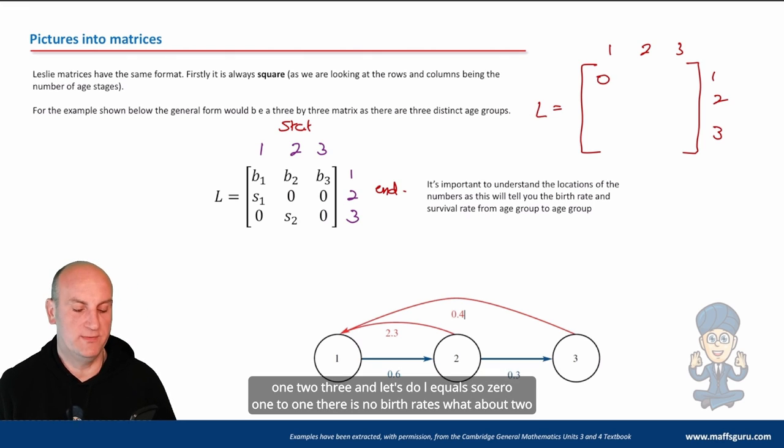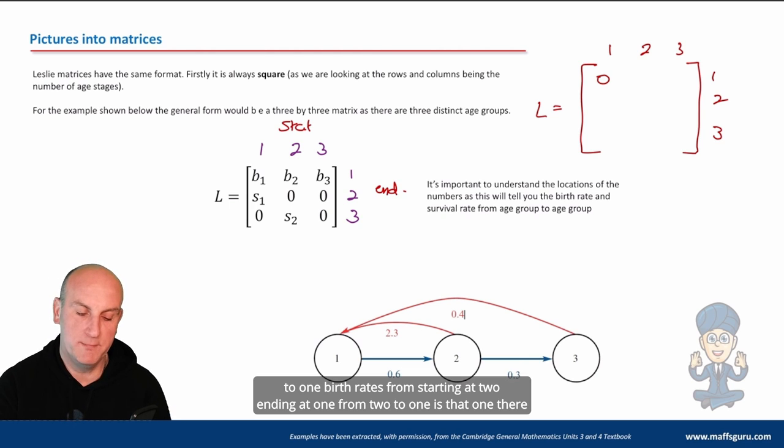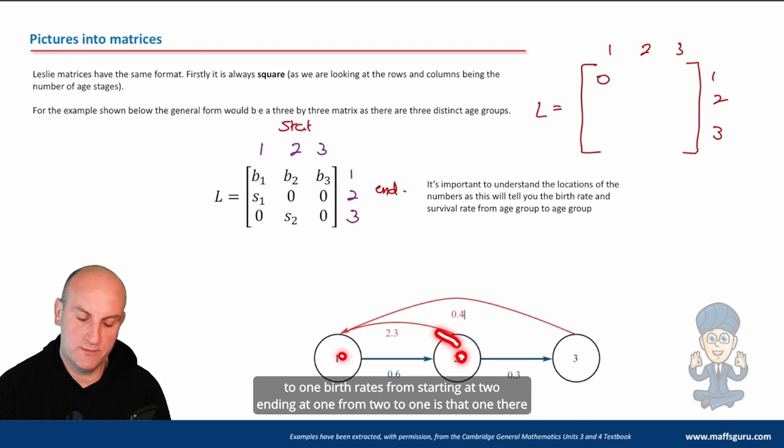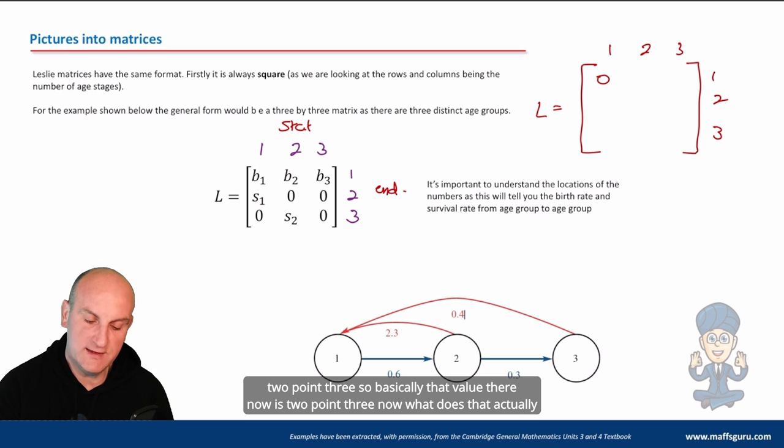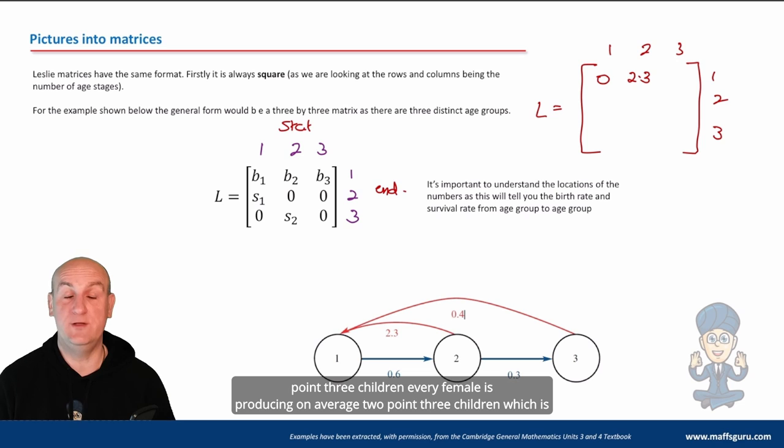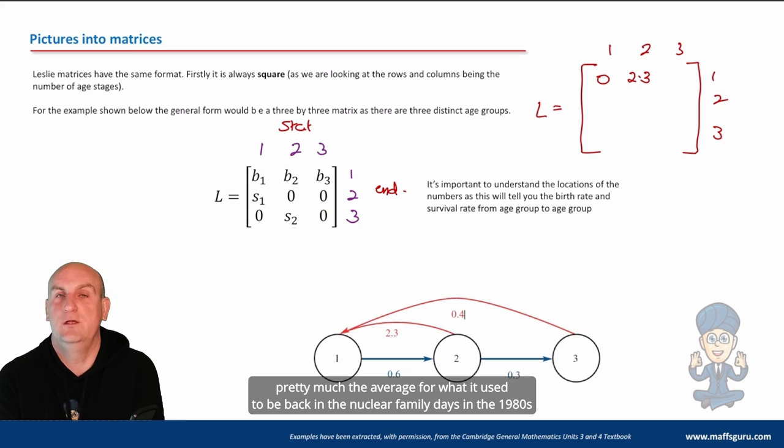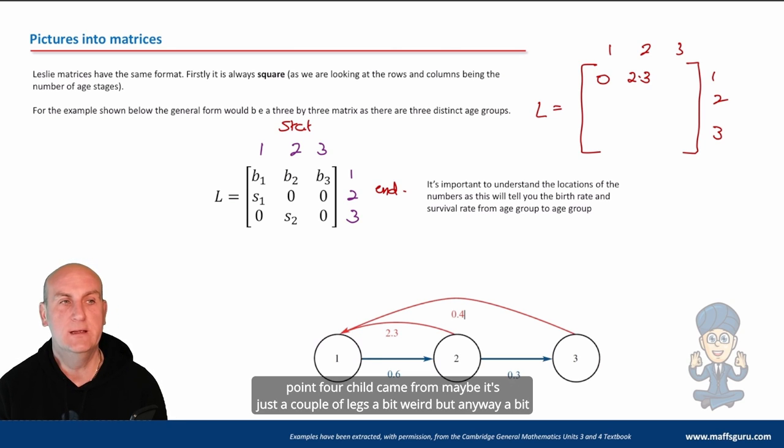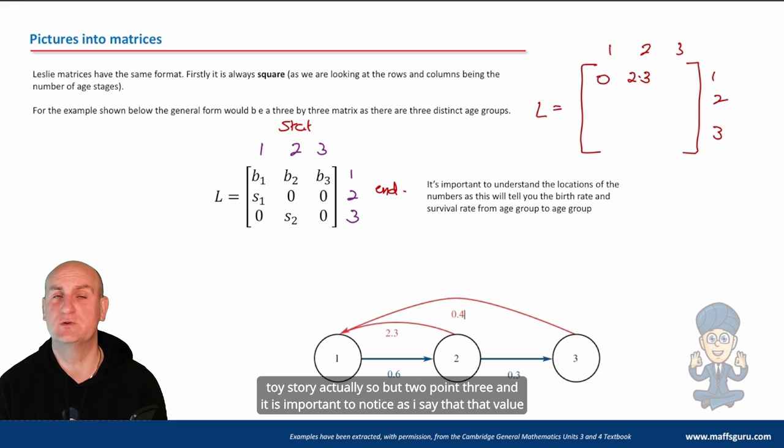What about two to one? Birth rates from starting at two, ending at one. From two to one. Is that one there? 2.3. So basically that value there now is 2.3. Now what does that actually mean? It means that on average, every single person in that group there is producing 2.3 children. Every female is producing on average 2.3 children, which is pretty much the average for what it used to be back in the nuclear family days in the 1980s, where every family apparently had on average 2.4 children. I don't quite know where the 0.4 child came from. Maybe it's just a couple of legs. A bit weird, but anyway, a bit toy story actually.